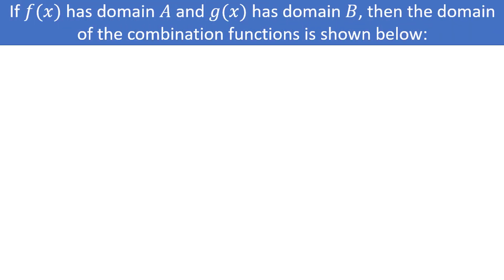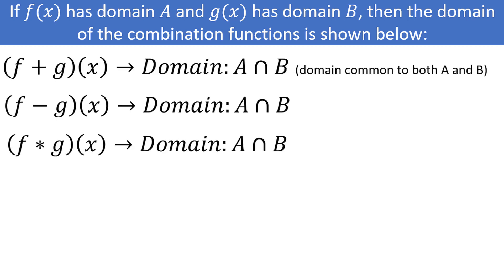It's important to pay attention to the impact combining functions has on the domain of the combined function. If f(x) has domain A and g(x) has domain B, then the domain of f + g, f − g, and f × g is the intersection of those domains, or A ∩ B — just the domain common to both functions. In other words, the domain can only get more restrictive in the combination function.